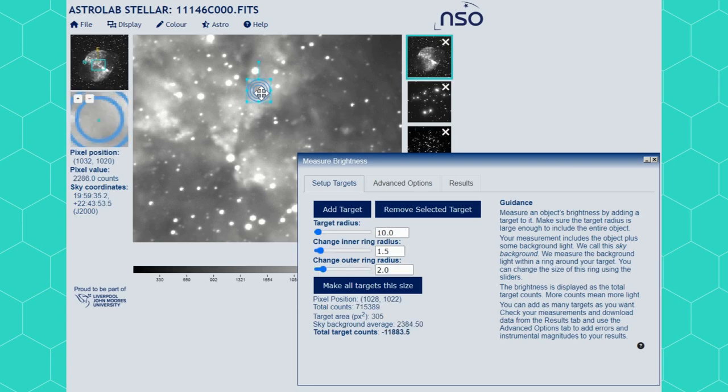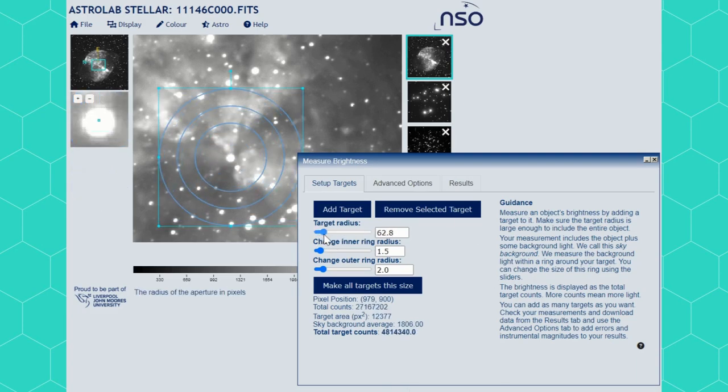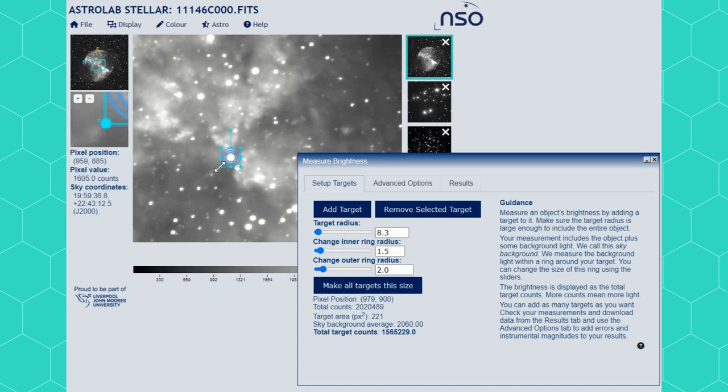You can now move your photometry circle onto your target. You can use the sliders to change the size of the central circle. This should just encompass the object without too much background. You can also change the size using the arrows at the corners of the target.